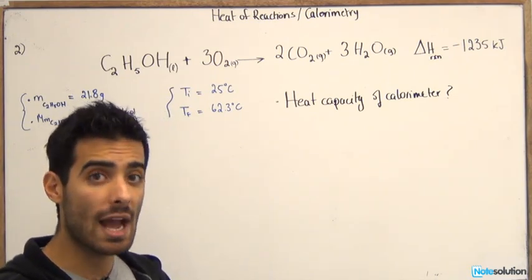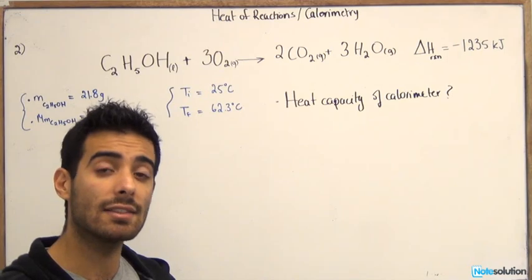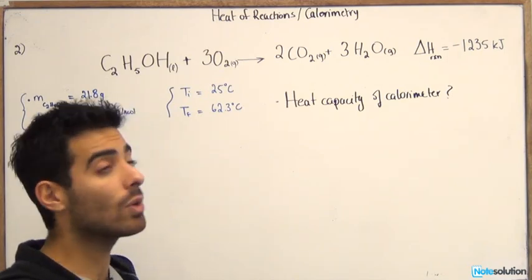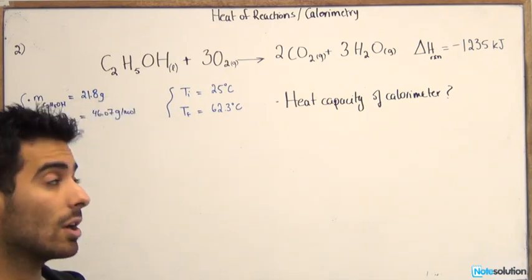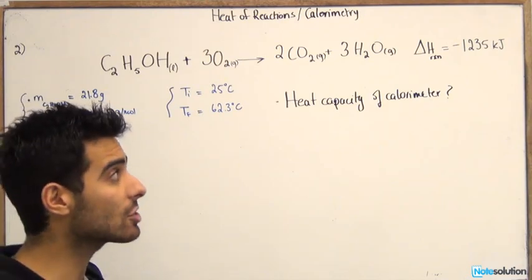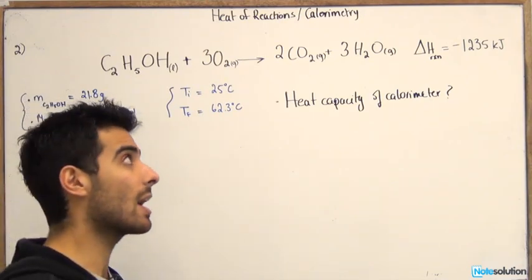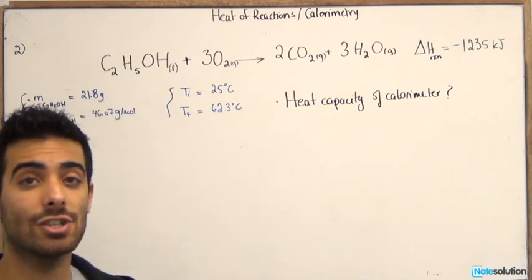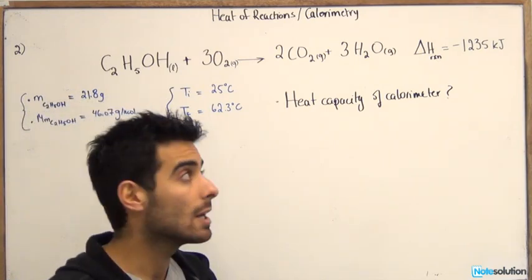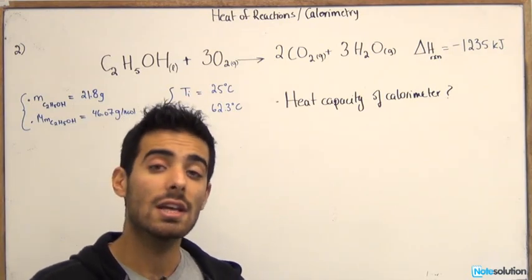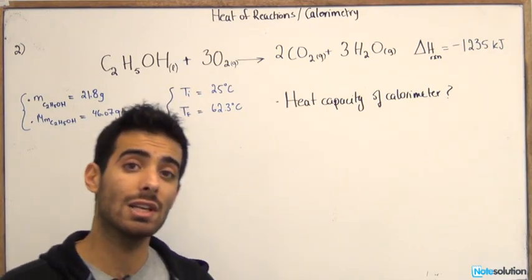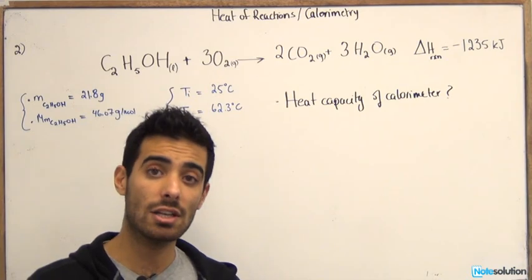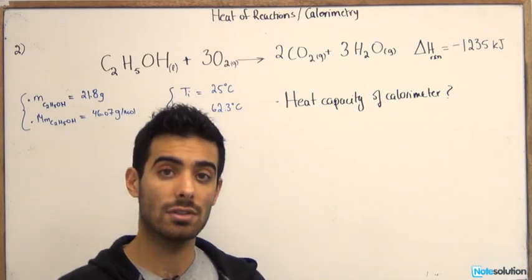So when delta H is positive it's called an endothermic reaction, and this means that the reaction requires energy in order to proceed forward. But when the delta H is negative, this means that the reaction releases heat. So it's a reaction that releases energy to the surroundings.